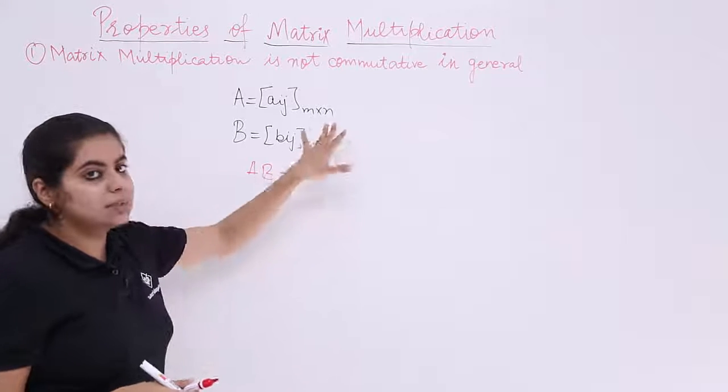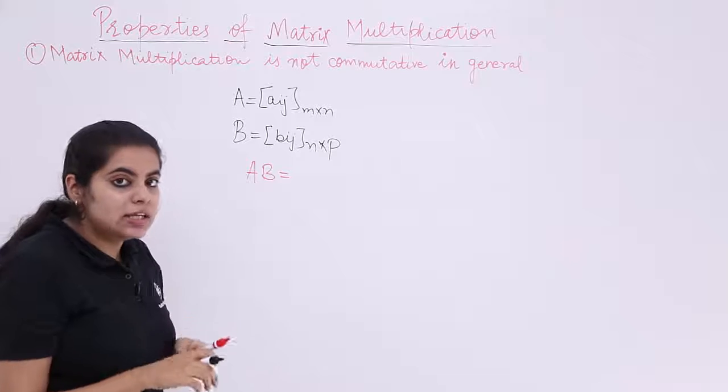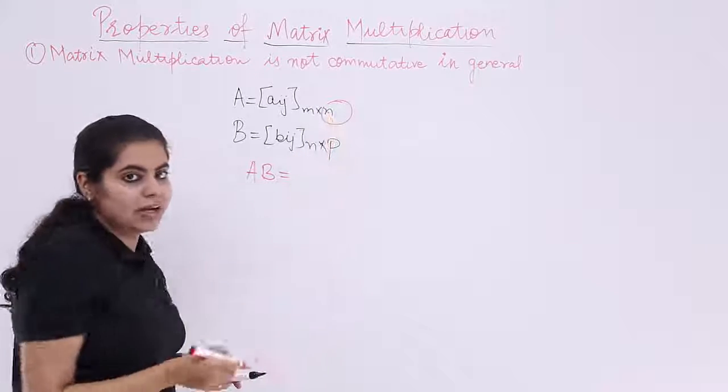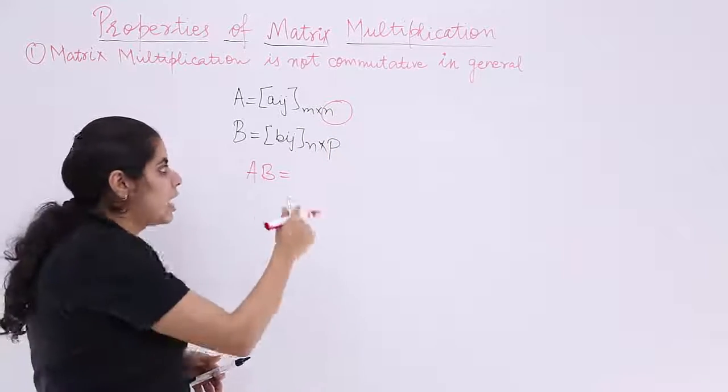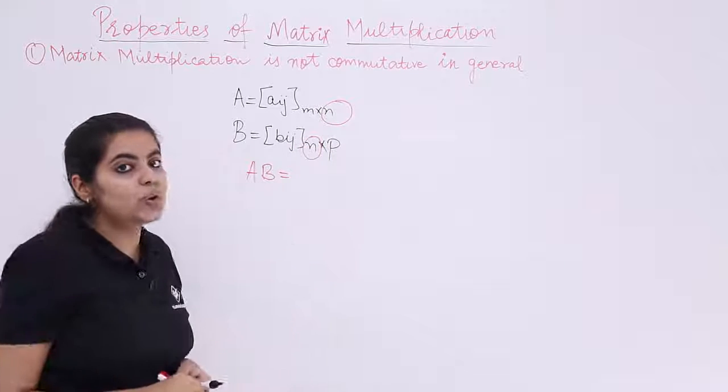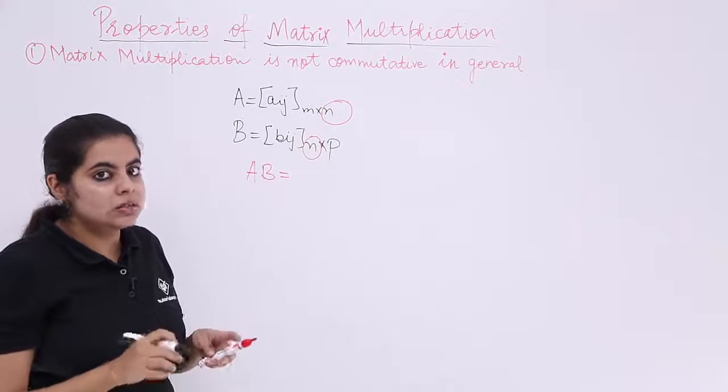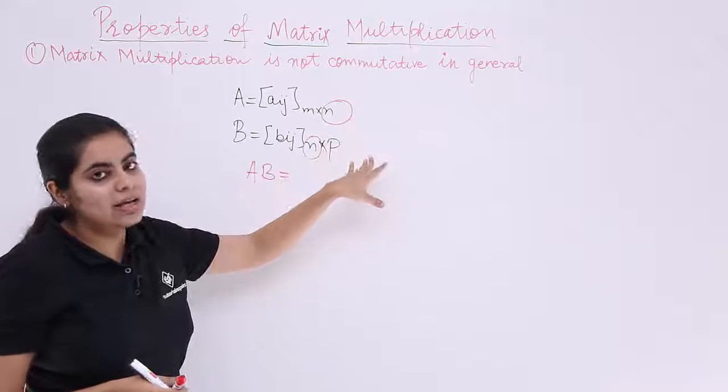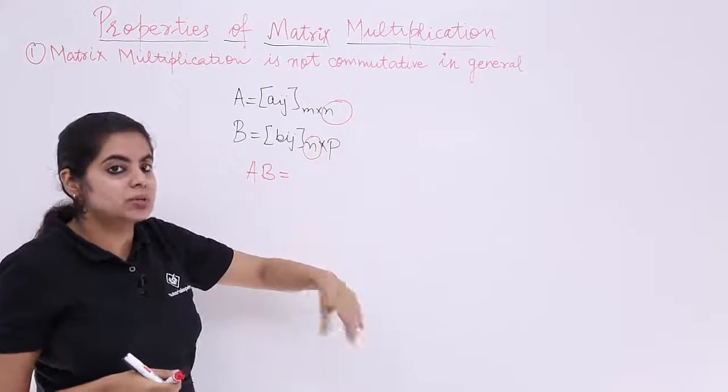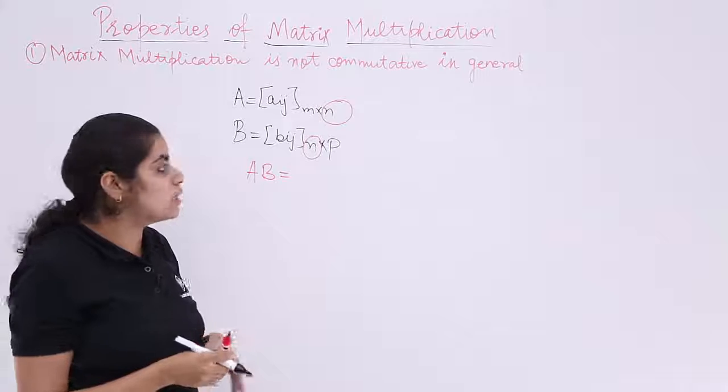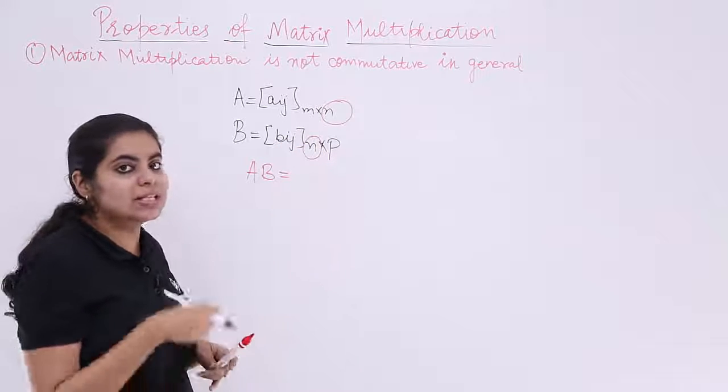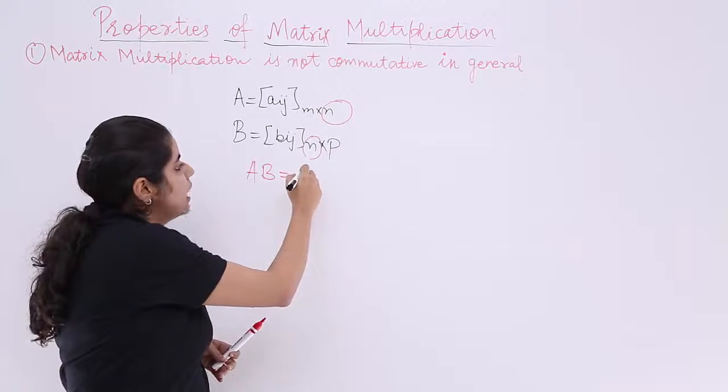Yes, AB is possible. The reason being that the number of columns of the pre-factor, which is the first matrix, are equal to the number of rows of the post-factor. So that means this is pre-multiplier, this is post-multiplier. In few books we will be seeing pre-factor, post-factor.